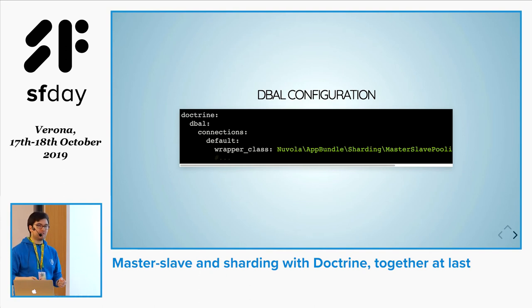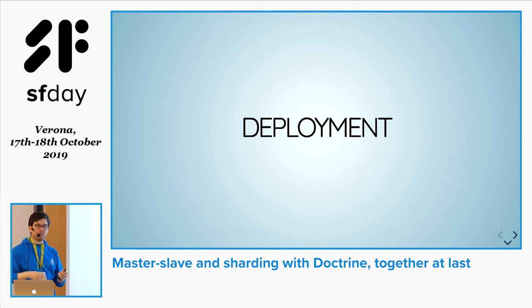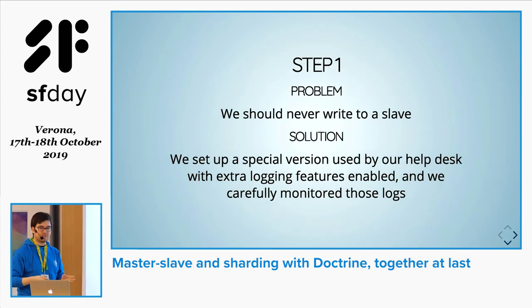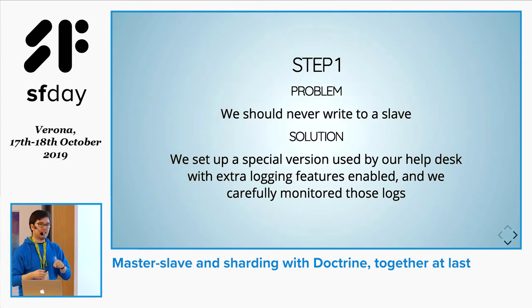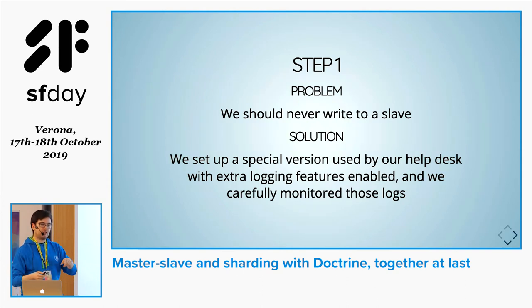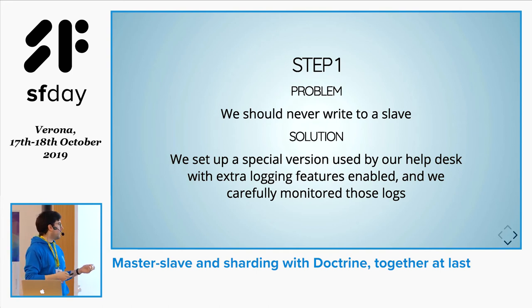Those were the main things we faced during the implementation phase. After that comes the scariest part: deploying this whole new thing without breaking everything. We wanted to break it down into smaller steps. The first was a test using the custom connection class — we wanted to make sure we are never writing to a slave. Our slaves are read-only, so besides being bad, it would also throw an exception and break the application. We created a special environment for our help desk people to use, with a lot of logging features enabled. We monitored those logs and became confident that everything was working properly.